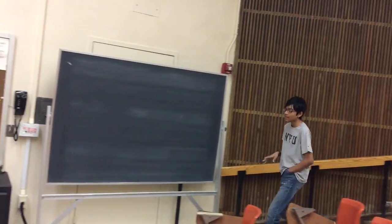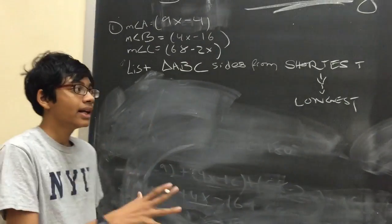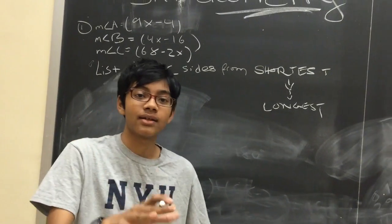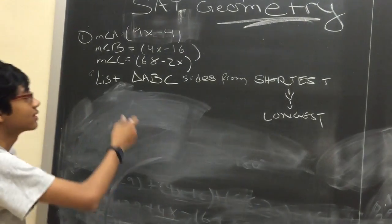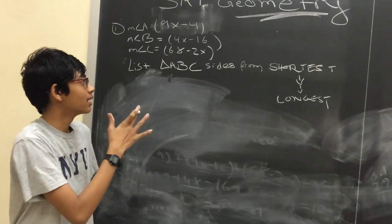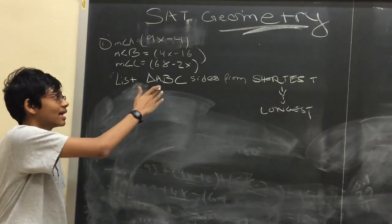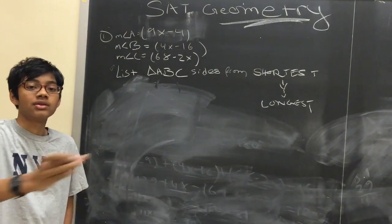More SAT geometry problems like that. If you remember last time, we did a problem to find the measures of each of the angles in a certain triangle and based on the angle measures of the triangle, we list each of the sides of that triangle from shortest to longest.